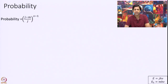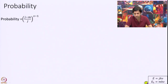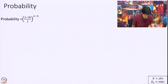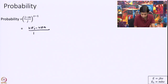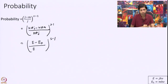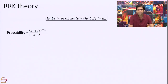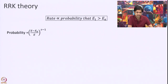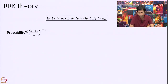Now we get back to the language of energies. The total energy E = j·hν and E0 = m·hν. Multiplying numerator and denominator by hν: h·ν·j is E, h·ν·m is E0. Finally, since the rate is proportional to the probability that E1 > Ea, this probability is approximately equal to ((E − Ea) / E) to the power of s − 1.